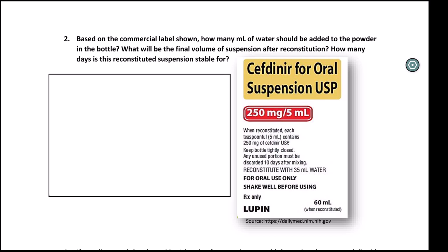So this question says, based on the commercial product shown. So this is an actual label of a product. This is cefdinir oral suspension. This is what the label would look like if you're in the pharmacy. And it says, how many mLs of water should be added to the powder in the bottle? You usually have to look at the outside or the inside of the container. There'll be some label on the bottle and it'll tell you what it is. And here it says, reconstitute with 35 mLs of water.